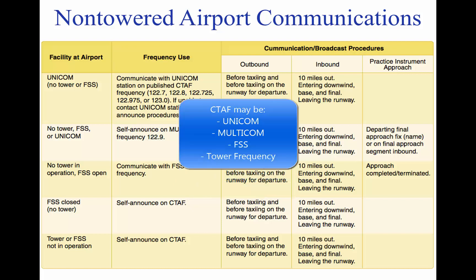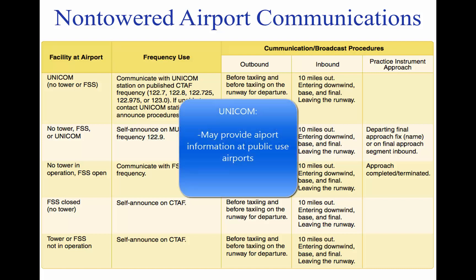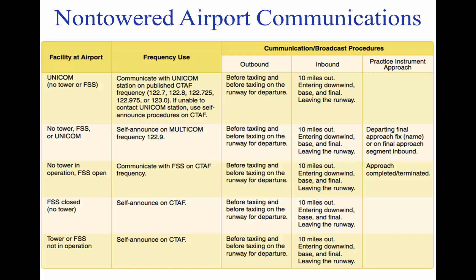The CTAF may be a universal integrated community (unicom), multicom, flight service station (FSS), or tower frequency, and is identified in appropriate aeronautical publications. Unicom is a non-government air-ground radio communication station which may provide airport information at public use airports where there is no tower or FSS. This figure lists recommended communication procedures. More information on radio communications is discussed later in this tutorial.